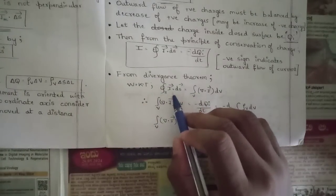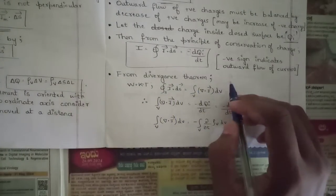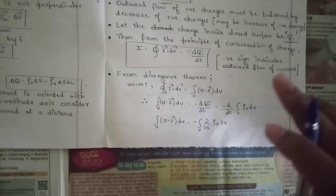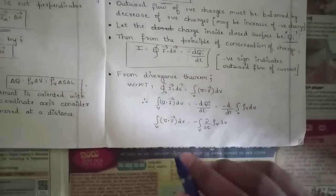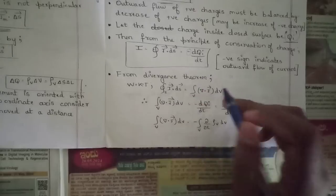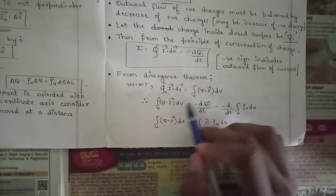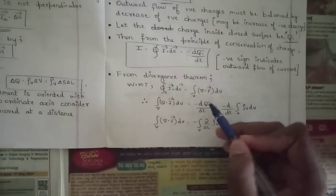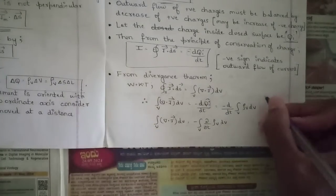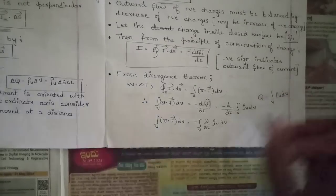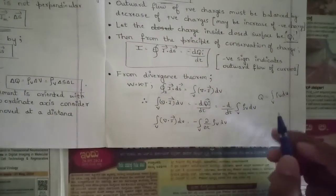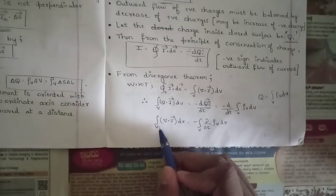From the divergence theorem: ∮ J · dS = ∫∫∫ (del·J) dV, replacing flux density D with current density J on both sides. So ∫∫∫ (del·J) dV = −dQi/dt. The charge Qi = ∫∫∫ ρv dV, as established in the first module.